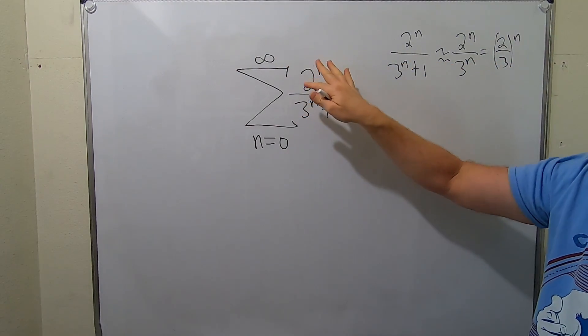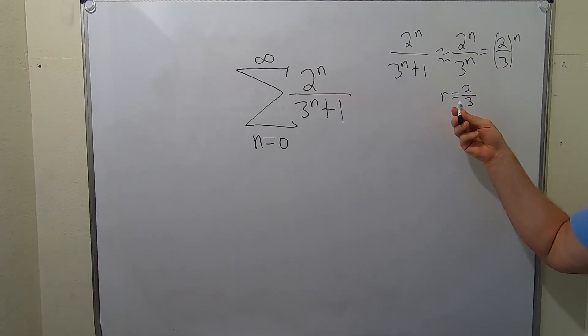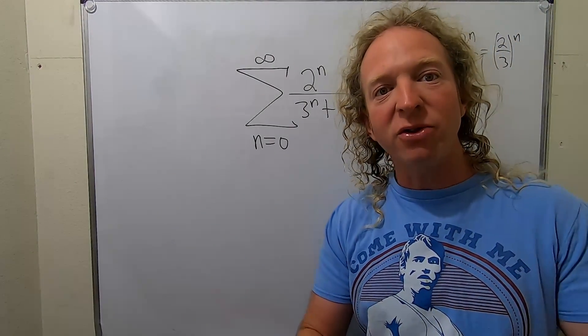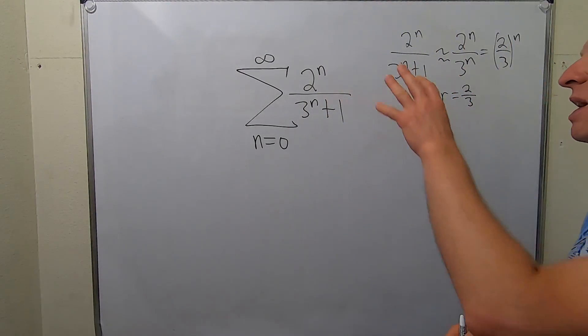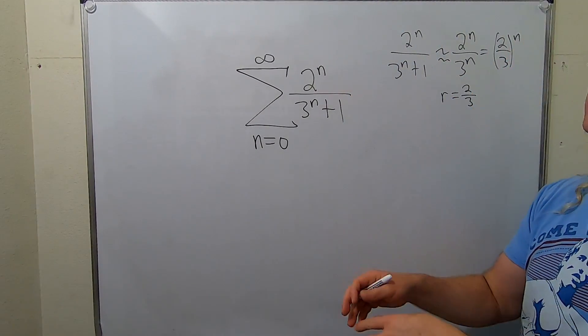So this series kind of behaves like a geometric series with r equals 2 thirds. And remember, if this is less than 1 in absolute value, the series converges. So this behaves like a convergent geometric series. Therefore, we should know that we're trying to show convergence.